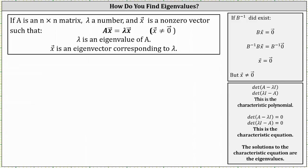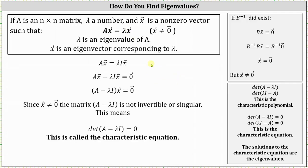To derive the equation that we use to determine the eigenvalues of a given matrix, we begin with the equation matrix A times vector x equals lambda times vector x, but we multiply the right side of the equation by the identity matrix. So the right side becomes lambda times the identity matrix times vector x. The next step is to subtract lambda times the identity matrix times vector x on both sides of the equation and then factor out the vector x.